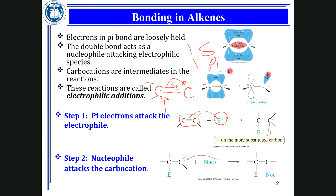By convention, we draw arrows from electron rich to electron poor. In reality, the electrophile is looking for electrons, and the pair of electrons from the pi bond helps the electrophile. For example, if you bring H+, it can come and form a bond with one carbon. A pair of electrons from the pi bond is consumed to form that new bond with the electrophile.